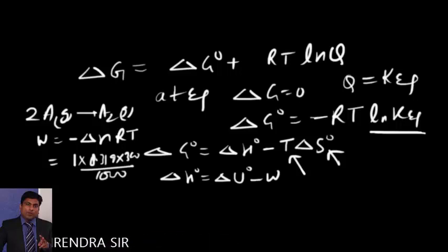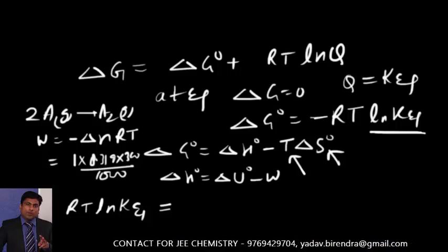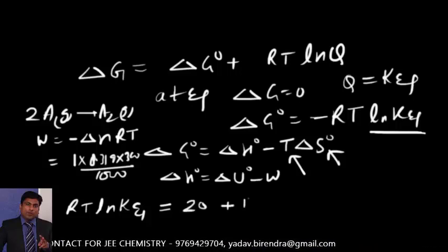Now, if you substitute here, it will become RT ln K equilibrium is equal to delta U0 is given as minus 20, so minus minus will become plus. So 20 plus 1 into RT, delta S is given as minus 30.